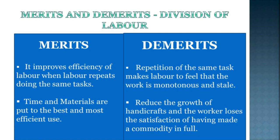Merits and demerits of division of labor. Merit: it improves the efficiency of labor when labor repeats doing the same task. Demerit: repetition of the same task makes labor feel that the work is monotonous and stale. Merit: time and materials are put to the best and most efficient use. Demerit: it reduces the growth of handicrafts and the worker loses the satisfaction of having made a commodity in full.